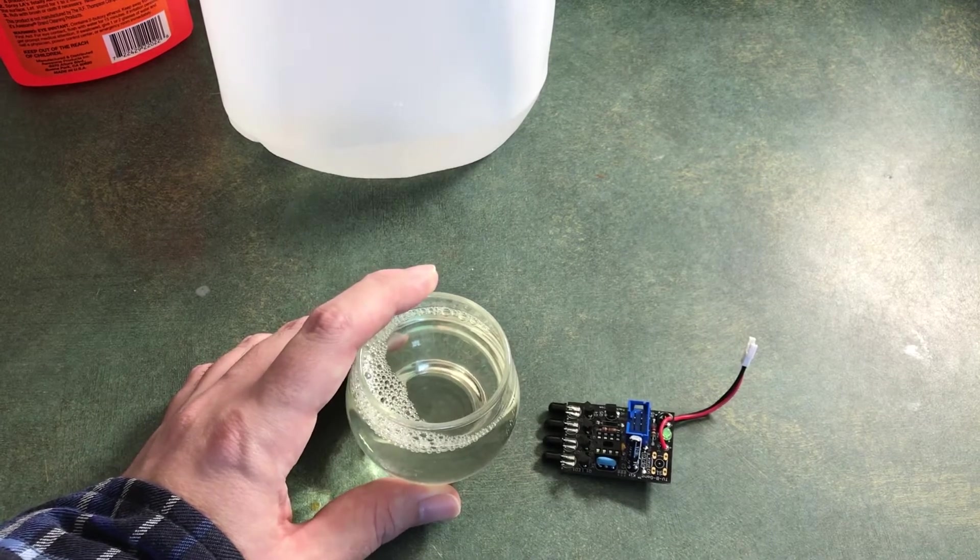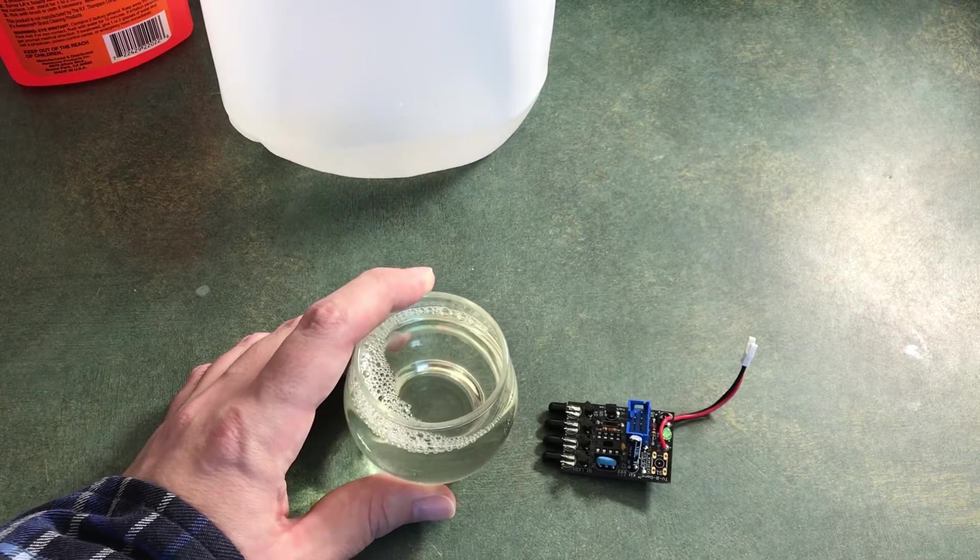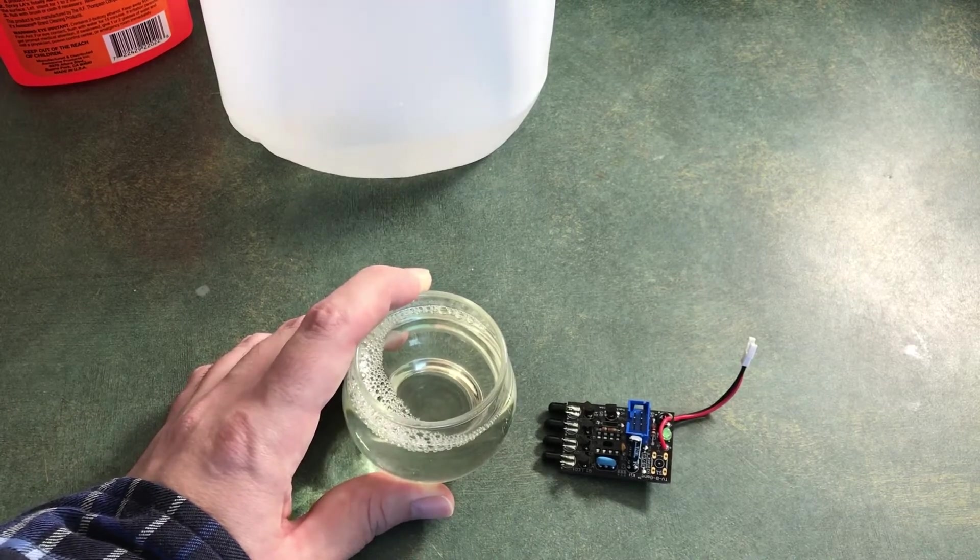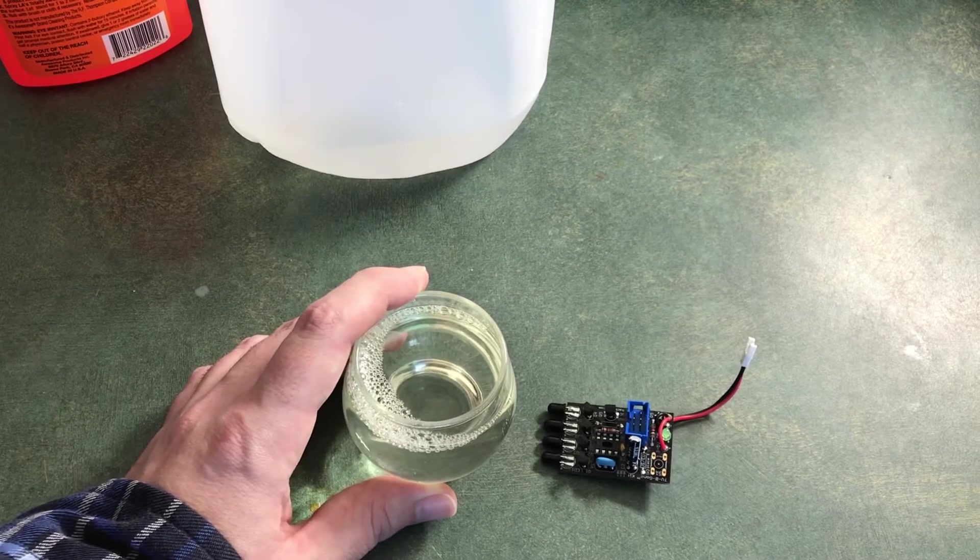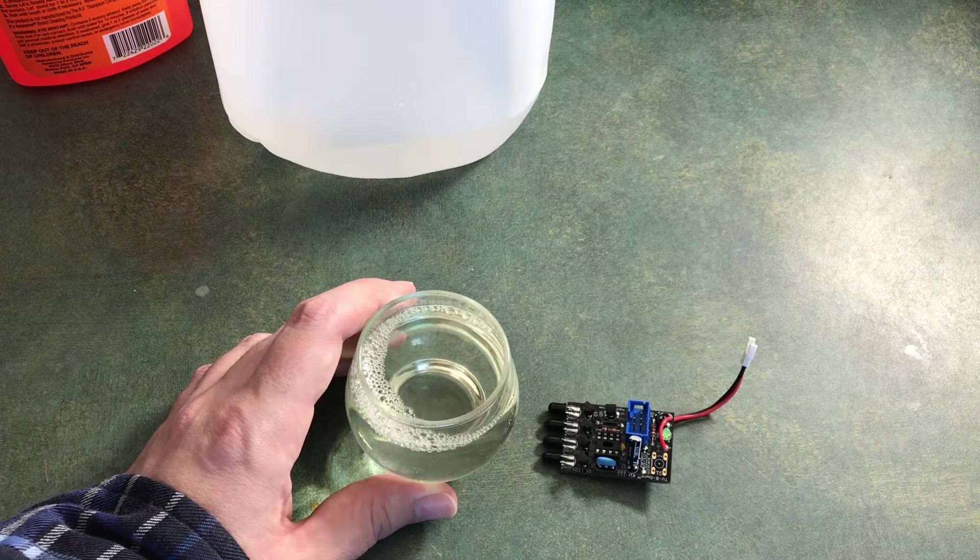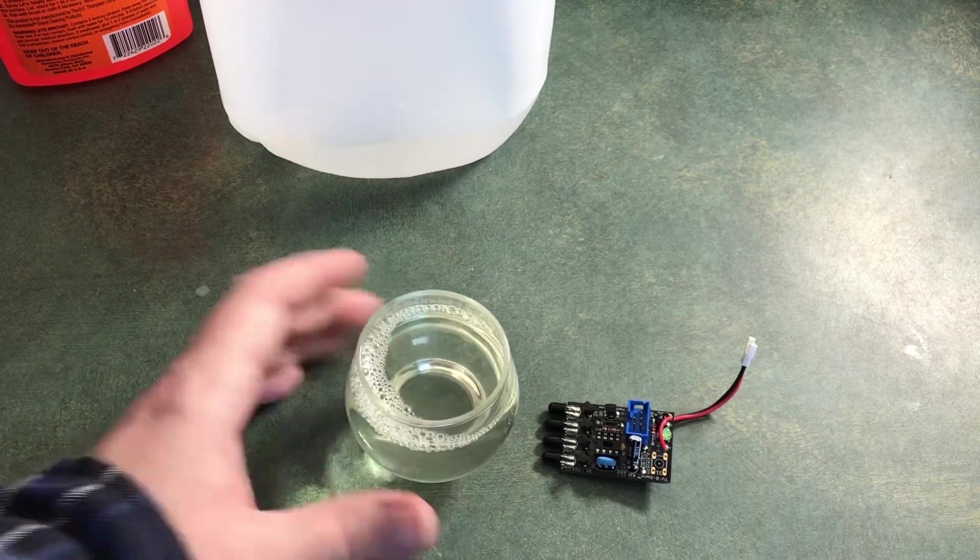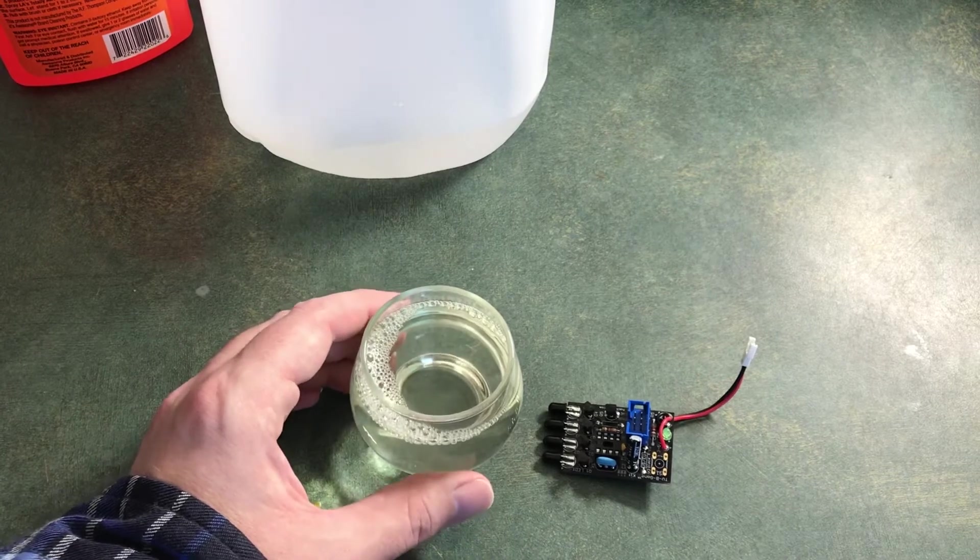You don't want to use regular steel because it'll etch the steel and then you've got steel in your solution that you don't want. And you especially don't want to use zinc coated plated steel because that zinc will come off. But you can also do what I'm going to do. I'm going to heat this up in the microwave.